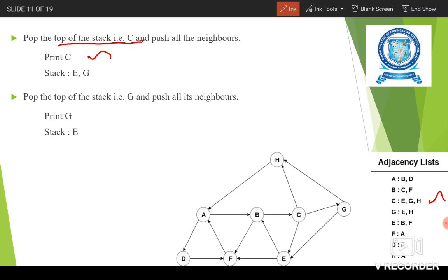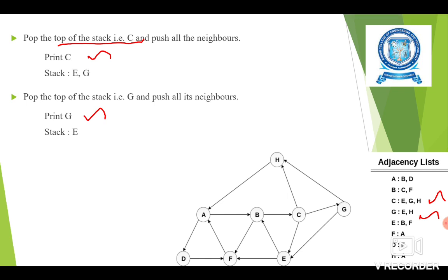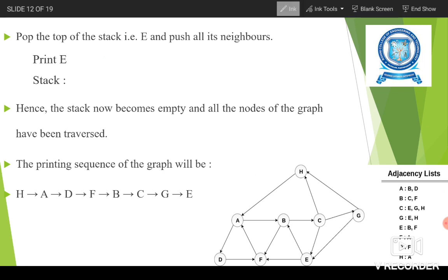We pop the topmost element from the stack, which is G, and print it. The neighbors of G are E and H. H is already processed, and E is already in the stack, so we do not re-insert them. The stack now contains only E, so E is popped and printed. The neighbors of E are B and F — both are processed nodes — so we do not insert them. The stack becomes empty, meaning all nodes of the graph have been visited.